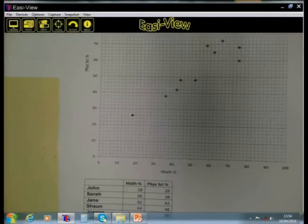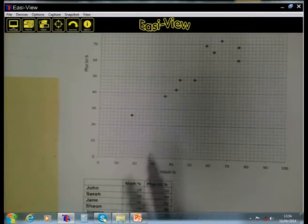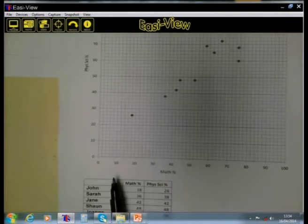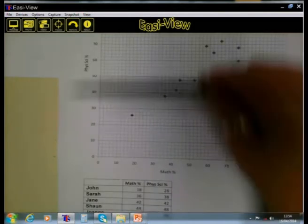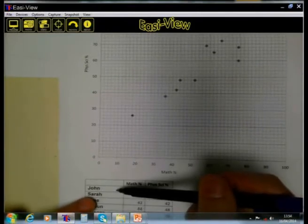If we take this data and we want to put it now on a diagram, then you will see we have for every learner two sets of data. We have for every learner a math mark and a physical science mark. So if you look at the first one here, John.